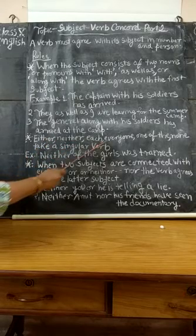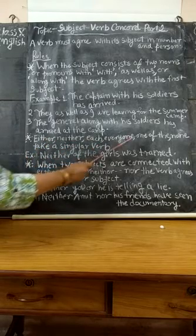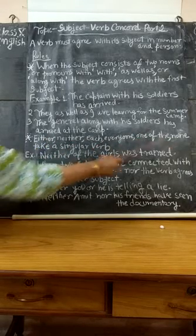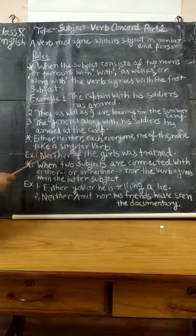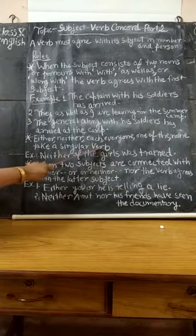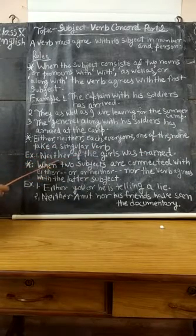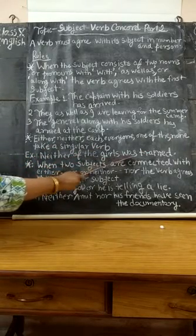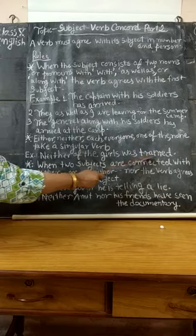Either, neither, each, everyone, one of the, none — these take a singular verb. Example: 'Neither of the girls was trained.'